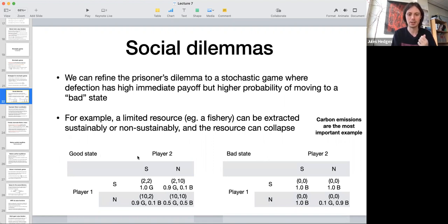You can have a good state where the resource is abundant and a bad state where the resource has collapsed. Extracting sustainably keeps the resource in the good state with high probability, and extracting non-sustainably can make it transition into a bad state. In the bad state, the payoffs are much lower, so there is no resource left.